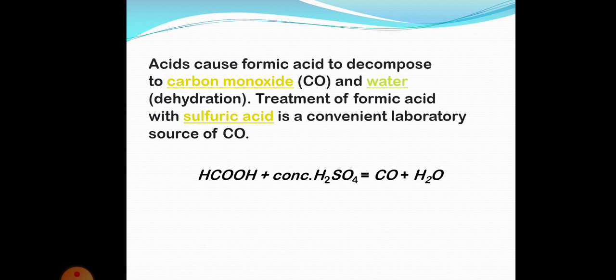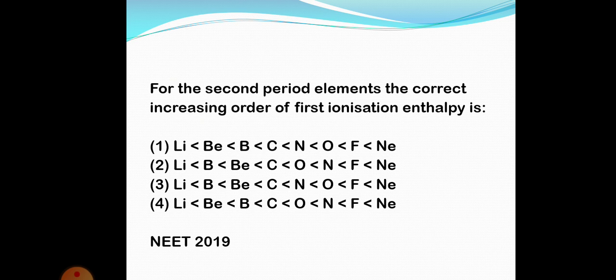The next question is from NEET 2019: for the second period elements, find the correct increasing order of first ionization enthalpy. The general trend is that ionization enthalpy always increases as we move from left to right across the period, because the size decreases as we move across the period.